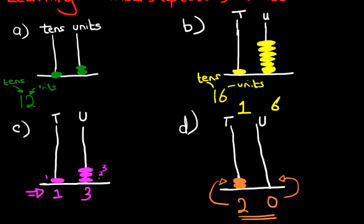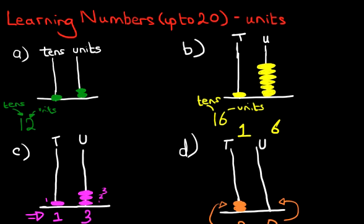So that is how we use the abacus to show numbers up to 20 and how we tell the units and the tens.